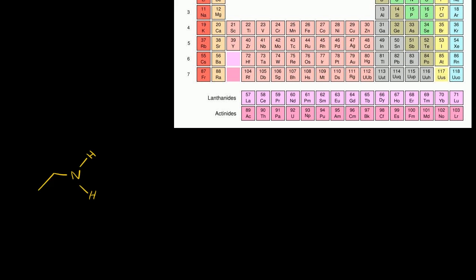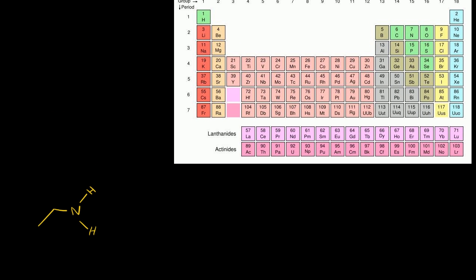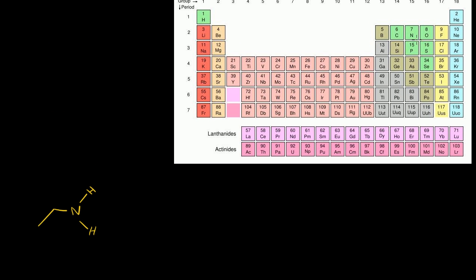If you look at the periodic table, you can see nitrogen is in group five. This says group 15, but we're going to ignore the transition metals for now. So it has five valence electrons.